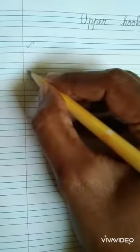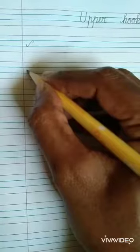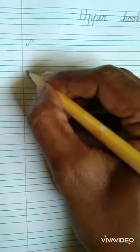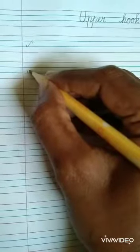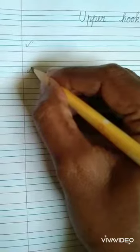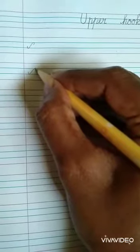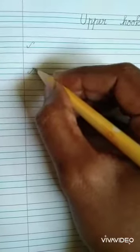What is it? Upper Hook. Start from middle of the blue line, come down and go up. You should not take your hand and one down curve. Upper Hook.